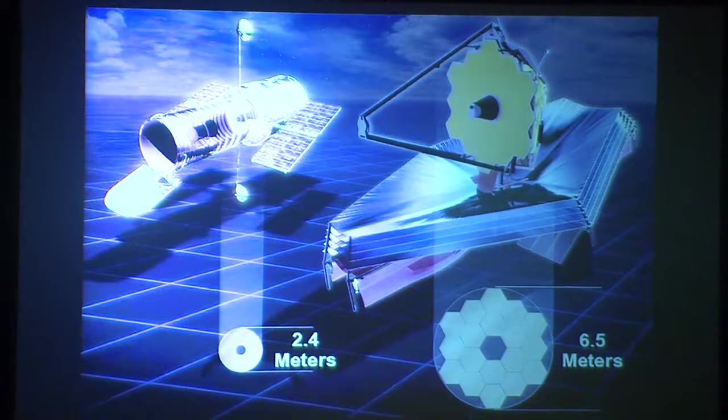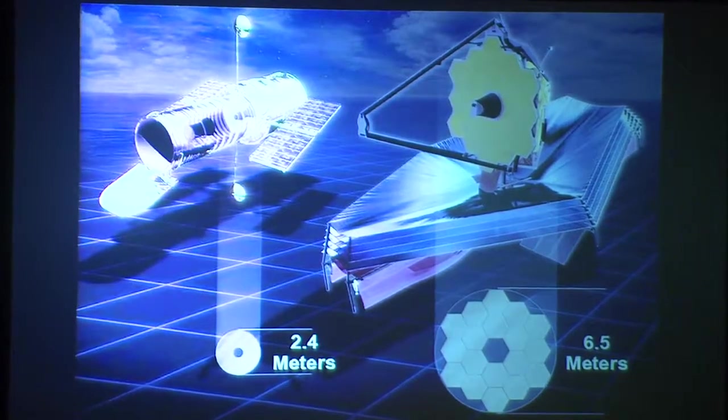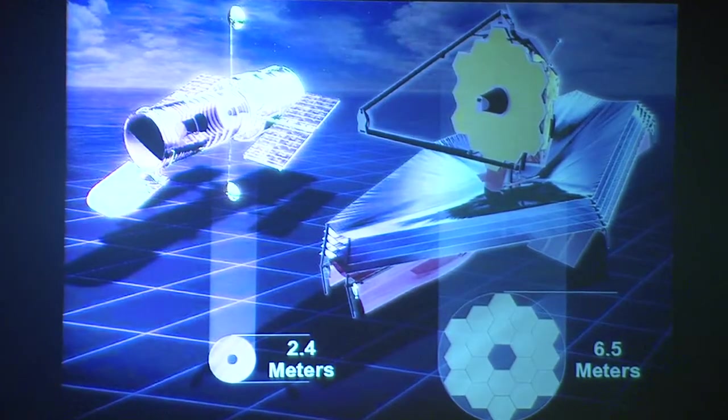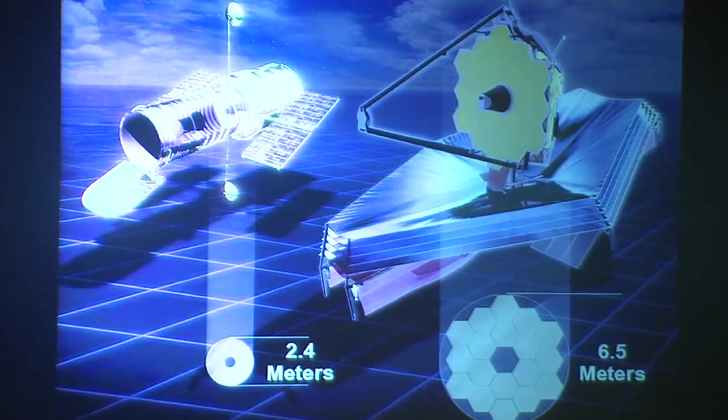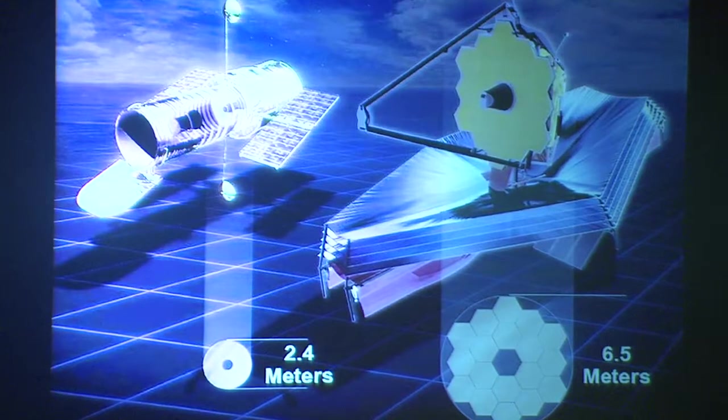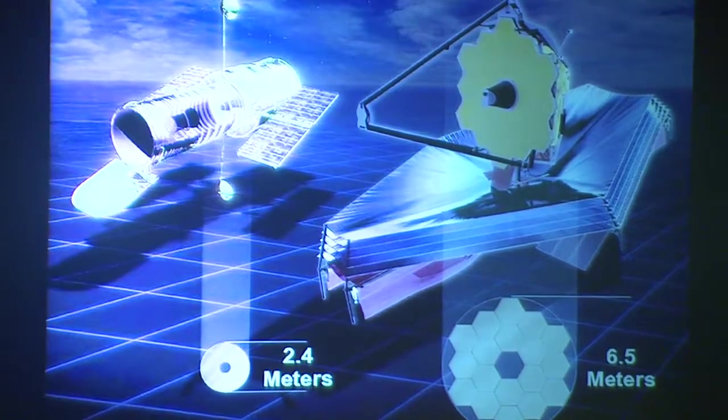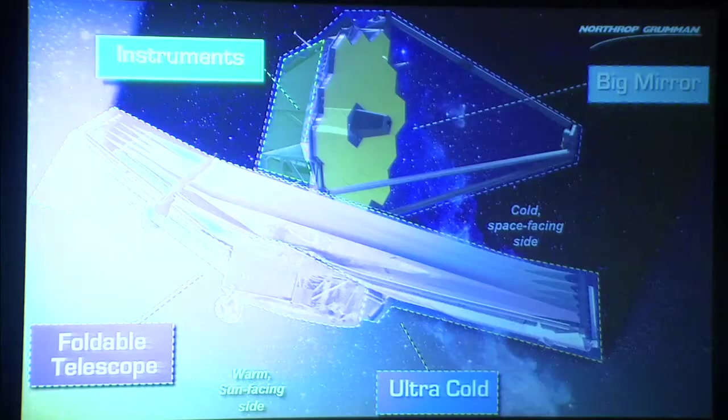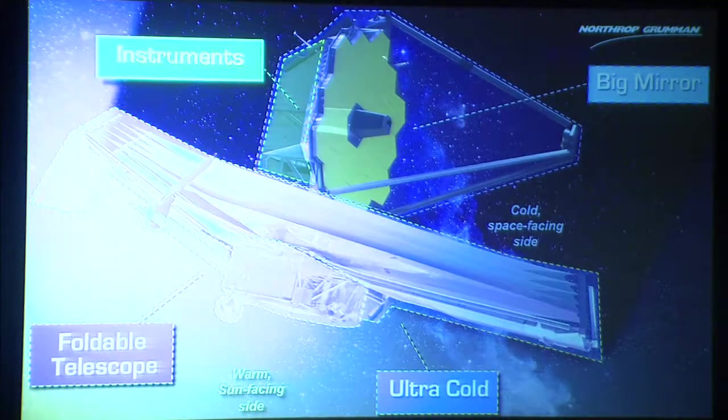That Hubble on the left has a mirror that's 2.4 meters in diameter. That's a pretty big mirror that collects photons. Not good enough when you want to look 13.5 billion years back in time at light that's really faint. So they want more photons. More photons means bigger mirror. So let me talk a little bit about the instruments and the mirrors. Let me give you a feeling of the audacity of this engineering.